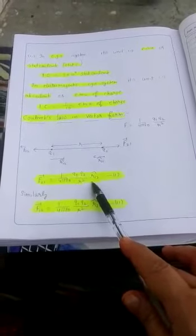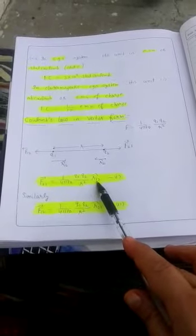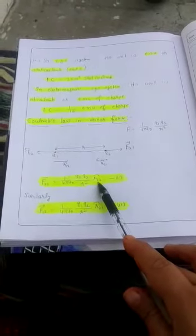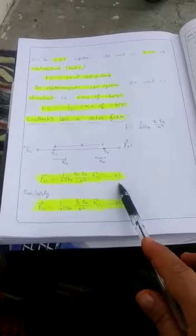Unit vector means vector having unit magnitude and it gives us direction. The force exerted by first particle, so unit vector is from 1 to 2. This is equation number 1.